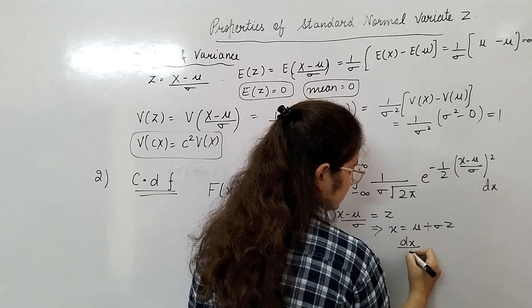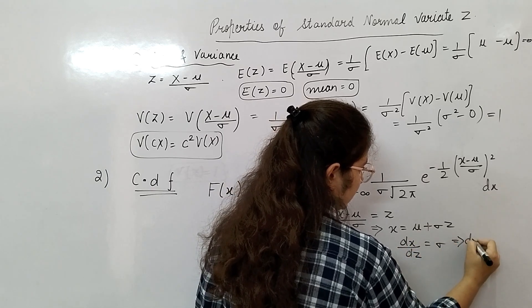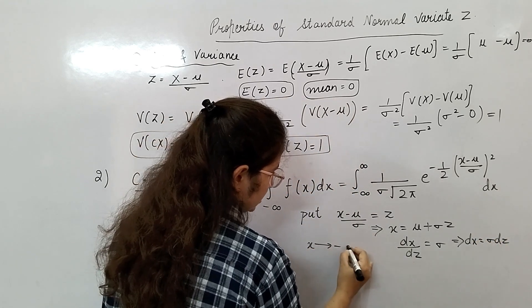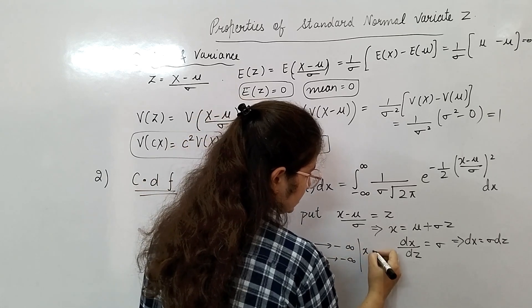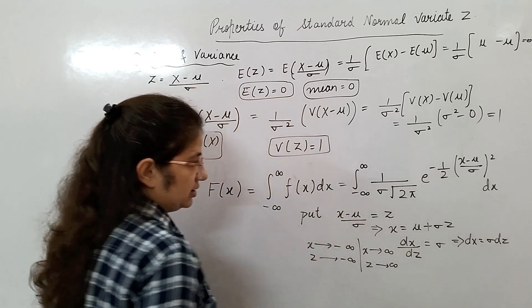Now put X minus mu by sigma equals Z. From here what will we get? X equals mu plus sigma Z. So differentiate this X with respect to Z, it will be sigma. From here dx equals sigma dz. When your X is varying to minus infinity, your Z would also move to minus infinity. When X is moving to plus infinity, your Z will also move to plus infinity.